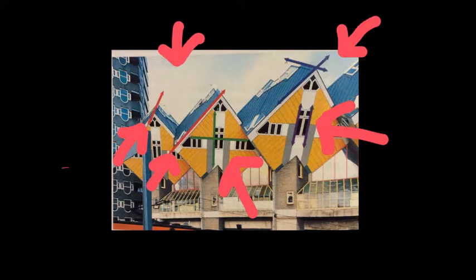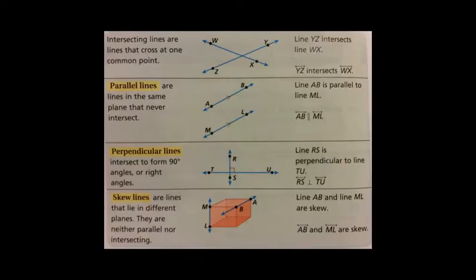So let's get into some definitions of these lines. So this table I think is very important that you get it into your notes. It will definitely help you out in definitions, how to write names, and that sort of thing. So our intersecting lines are just lines that cross at one common point. So you can see right here we have our common point where these two lines intersect. And we could explain this as line YZ intersects line WX. Or we could write it this way.